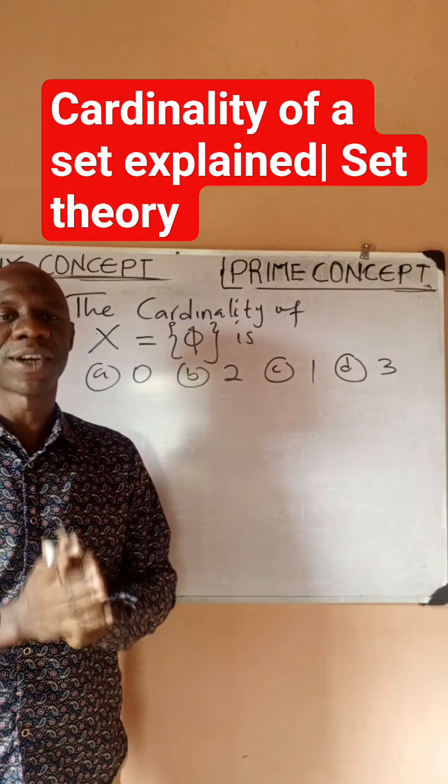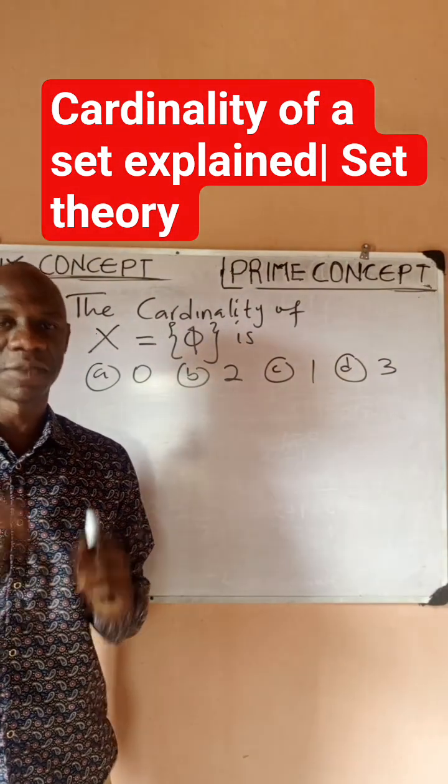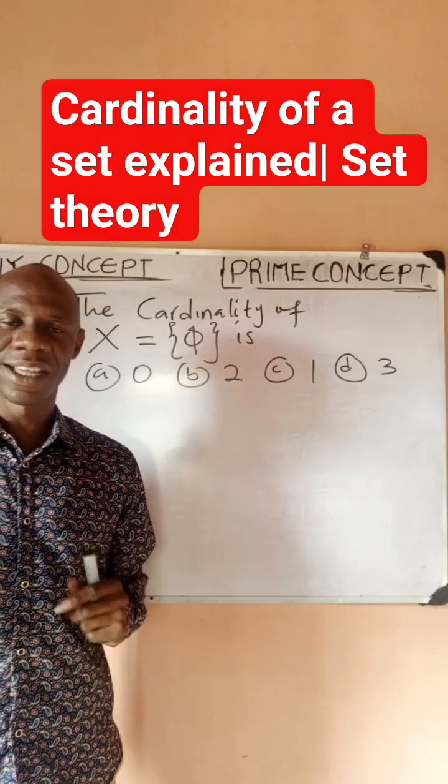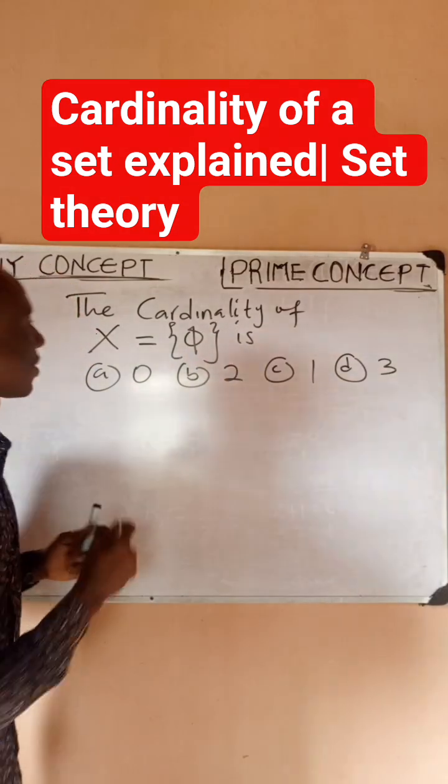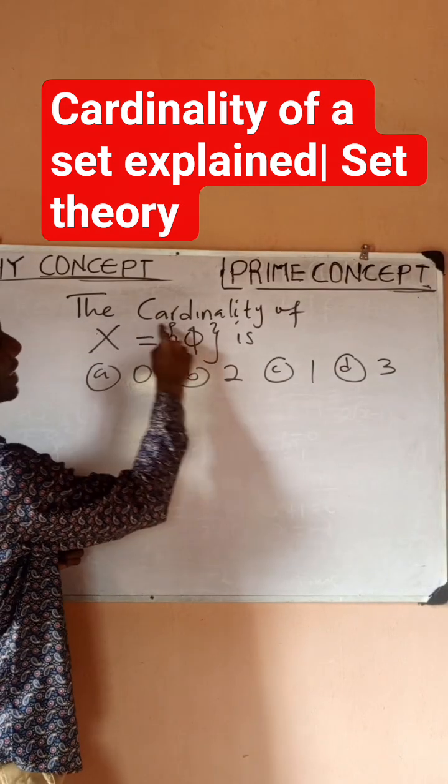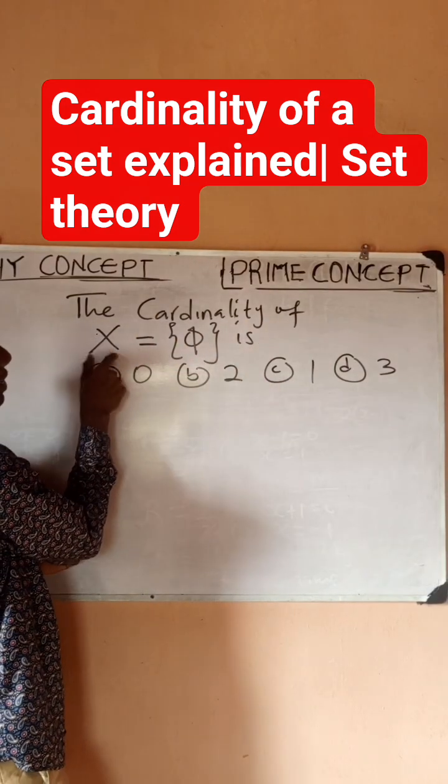Hello guys, this is Prime Concept. I want to solve a very quick and simple one under set theory, so take care that you don't miss out the concept. The question says the cardinality of X, this is a set X...